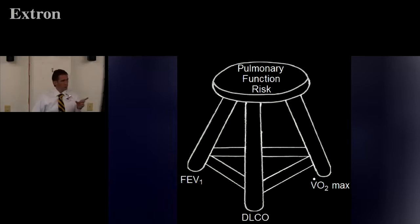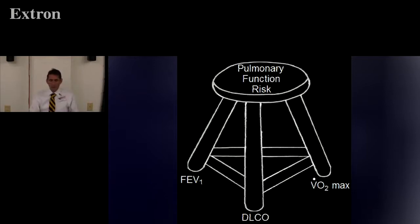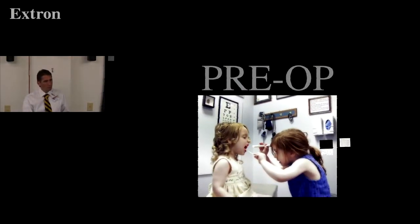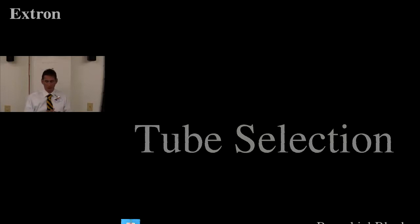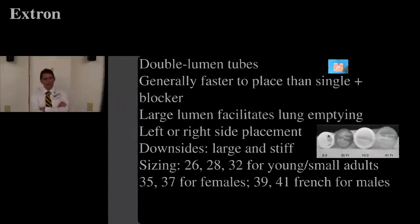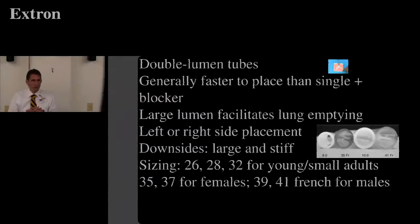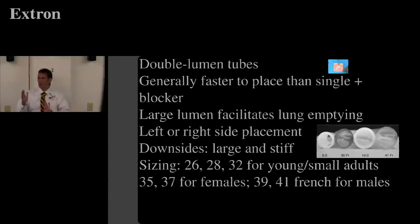Let's talk about tube selection. The nice thing about double lumen tubes is that what's bad about them is also good. They're huge — big honking tubes that are a challenge to get in — but there's really only one place they can go, in contrast to bronchial blockers which need much more precise placement.